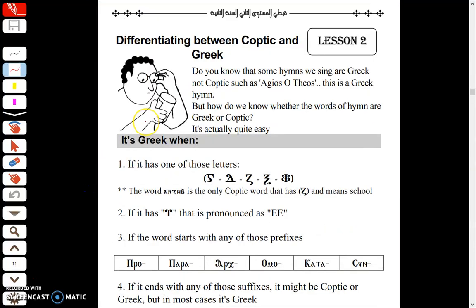In the name of the Father and the Son, the Holy Spirit, one God and man. This is the second lesson from the Coptic curriculum. In this lesson we will be studying the difference between Coptic and Greek, which means when you look at a word whether you can tell it's Coptic or Greek.